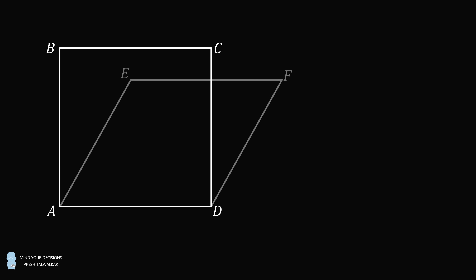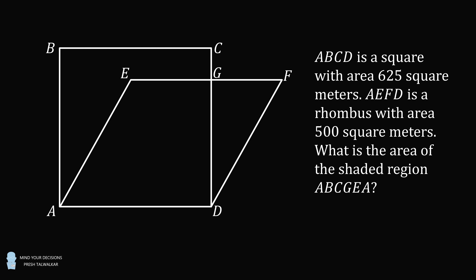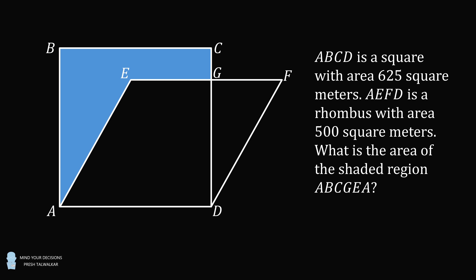Problem 1. ABCD is the square and AEFD is the rhombus. Suppose EF and CD intersect at point G. ABCD is the square with area 625 square meters. AEFD is the rhombus with area 500 square meters. What is the area of the shaded region ABCGEA?